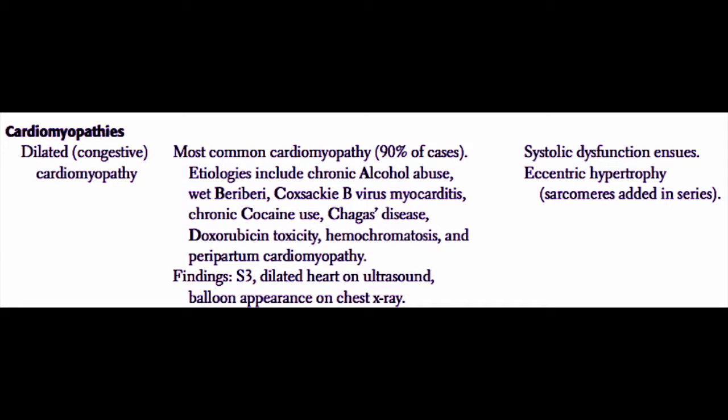These patients will develop systolic dysfunction, meaning a decrease in the ejection fraction. In contrast with concentric hypertrophy which occurs during hypertensive heart disease, with dilated cardiomyopathy these patients will have simply an enlarged chamber with thinning of the left ventricular wall. Major findings include a third heart sound, a dilated left ventricle on cardiac echo, and a large balloon-shaped appearance of the left ventricle on chest x-ray. Dilated cardiomyopathy results in eccentric hypertrophy, meaning that the sarcomeres are added in series.